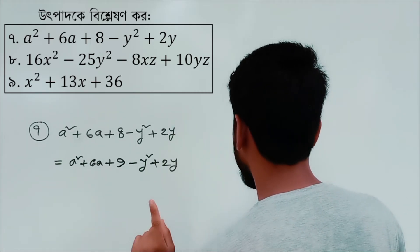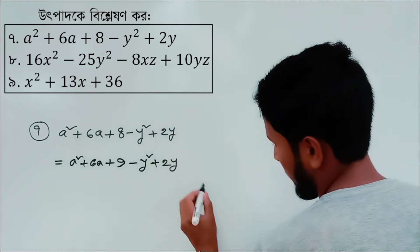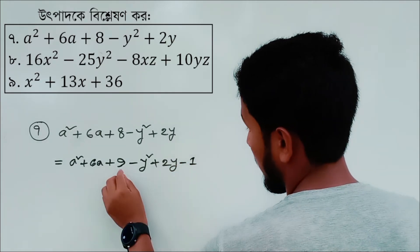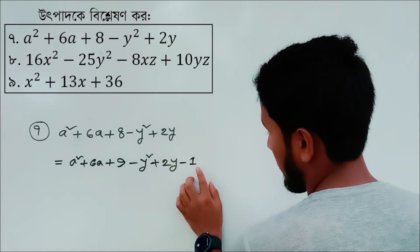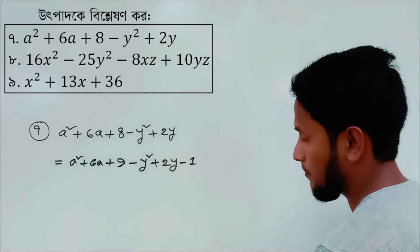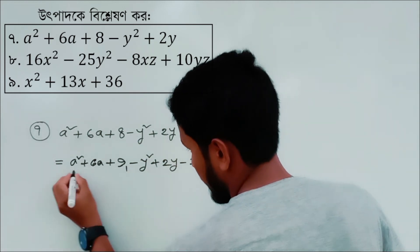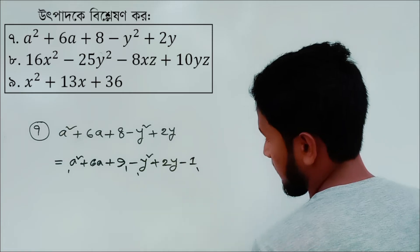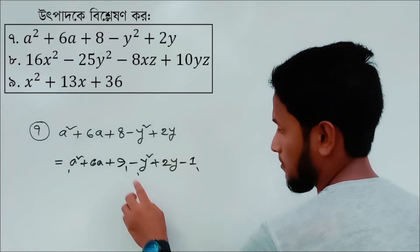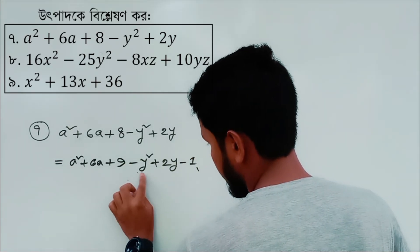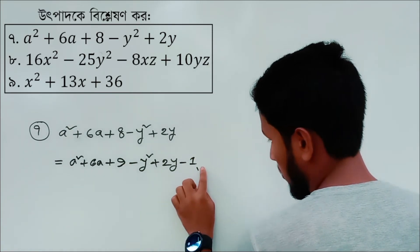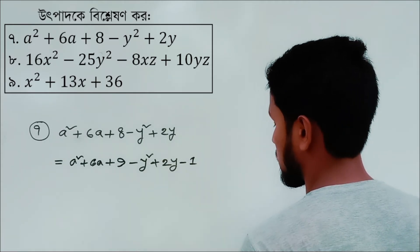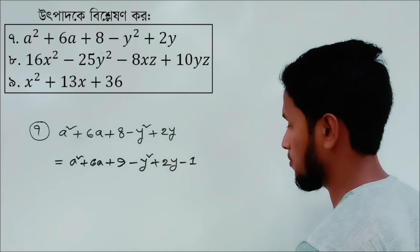We have to write 20. We have to write 8. You can write 8. We have to write 8 plus 2y.